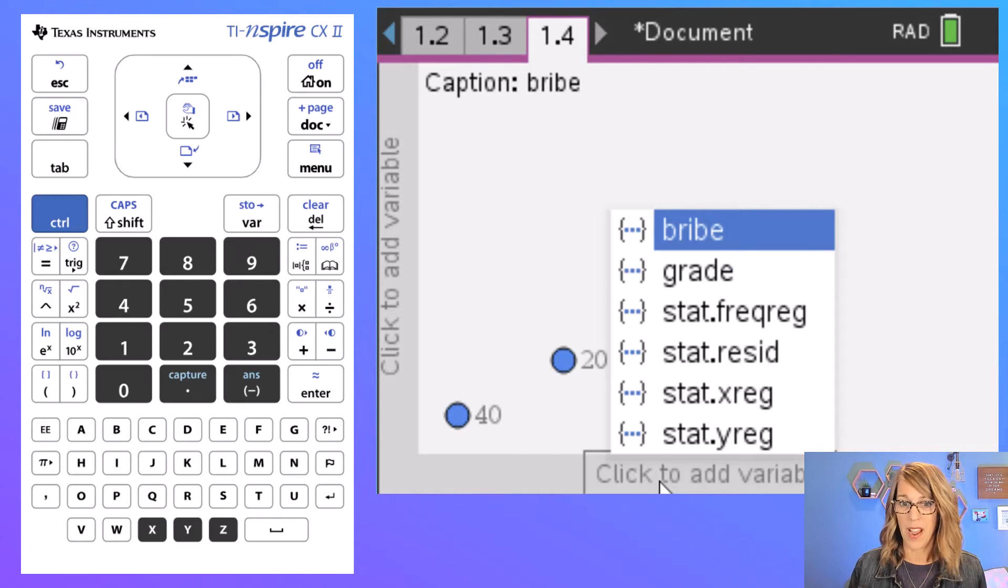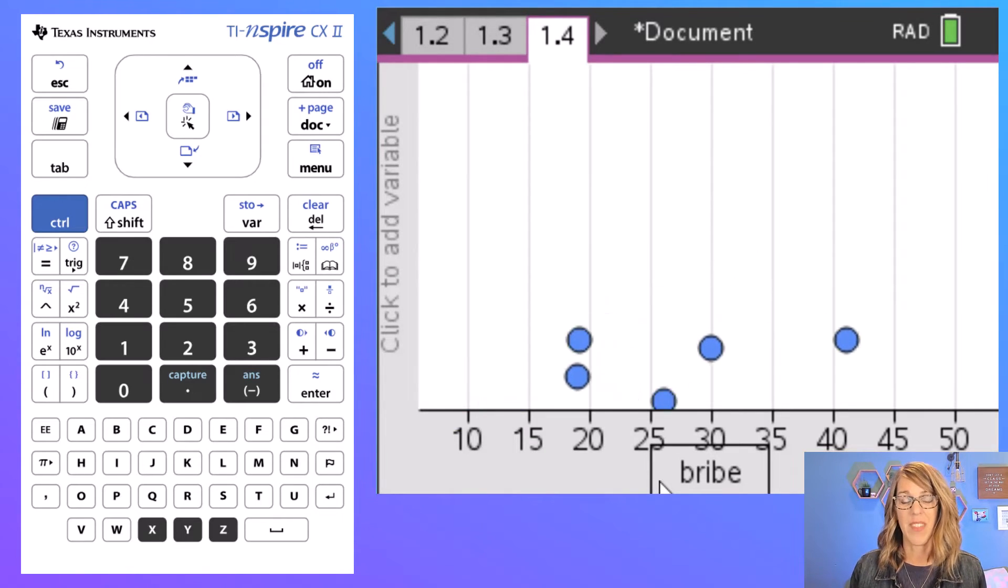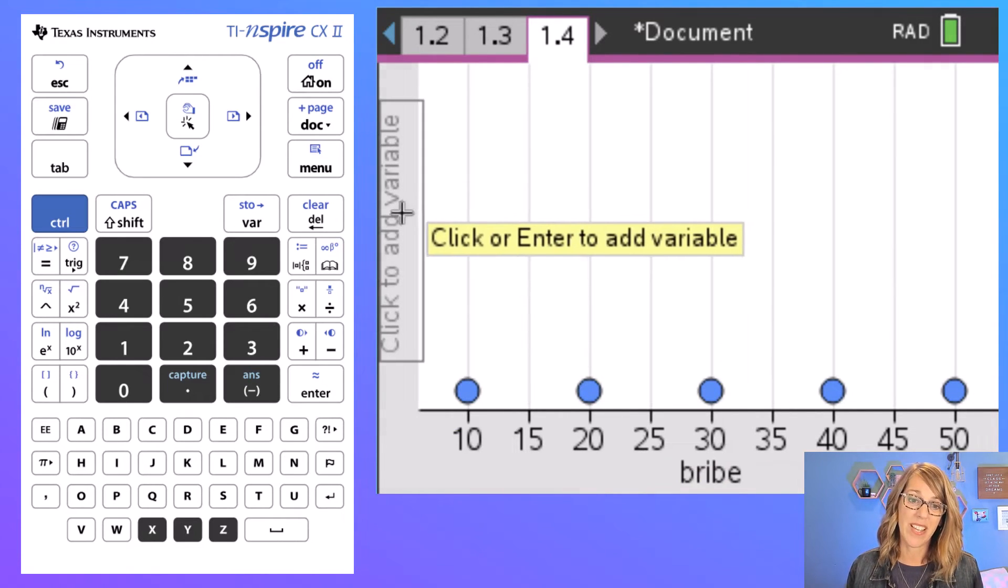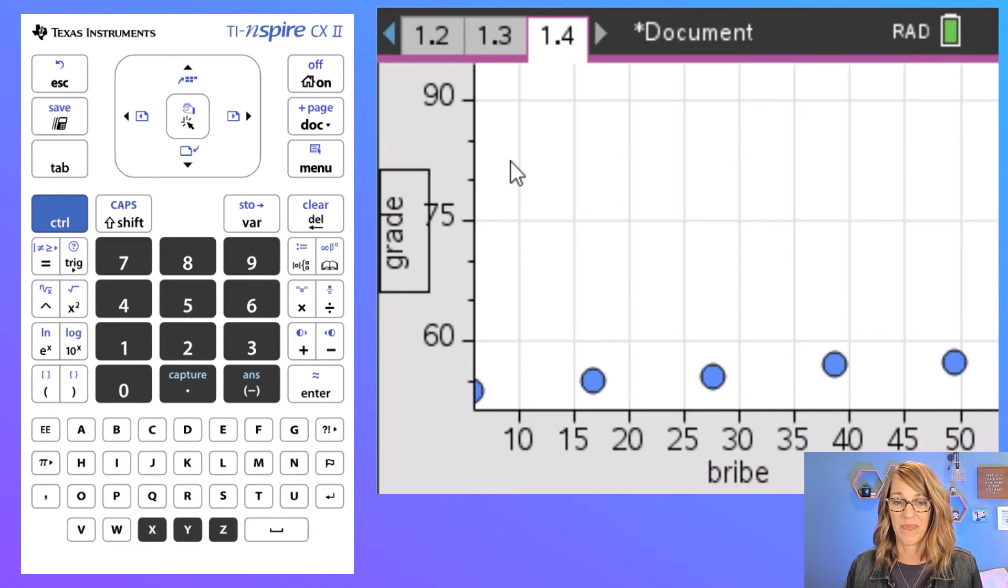And I do want bribe, so I'm going to hit enter. And then I do something really similar for the vertical variable and that's going to be my grade. Okay, so there's my scatter plot, perfect.